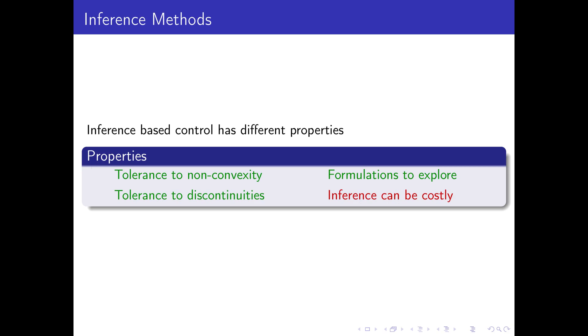Inference-based methods, specifically ones based on sampling, do not have strict requirements on the objective landscape. These methods have natural formulation for exploration. However, inferring the optimal distribution by sampling can be costly.